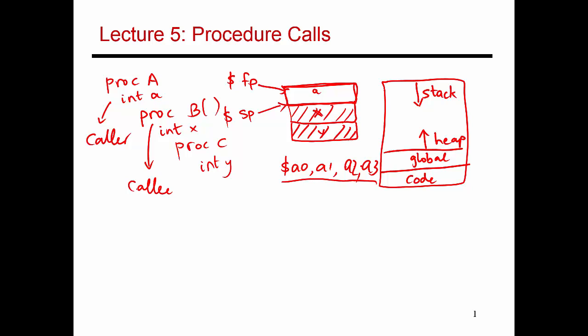When procedure B returns, it might be returning some value, say x — the value computed within procedure B is finally returned to procedure A. The way this is handled in MIPS is that procedure B has to put that result into special register V0 or V1, and then it returns. When procedure A gets control back, it can find the result of the previous procedure in special register V0. This is how procedures operate: you put arguments into registers A0 to A3, invoke the procedure, it creates its activation record, saves local variables, and once done, puts its result into V0 or V1 and hands control back.